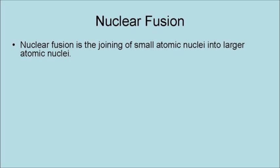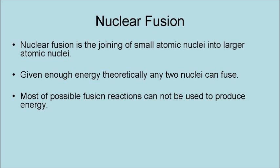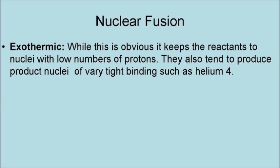Nuclear fusion is a joining of small atomic nuclei into larger atomic nuclei. Given enough energy, theoretically, any two nuclei can fuse. However, most possible fusion reactions cannot be used to produce energy. For a fusion reaction to be a usable source of energy, it has to meet several criteria. First of all, it has to be exothermic, which means it has to produce heat. While this is obvious, it does keep the reactants to nuclei with low numbers of protons. They also tend to produce cross-nuclides of very tight bonding, such as helium-4.